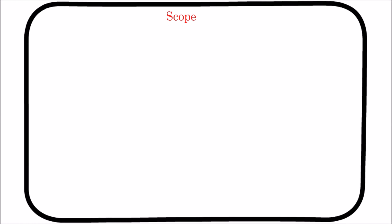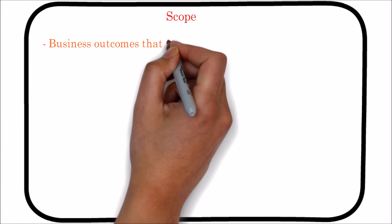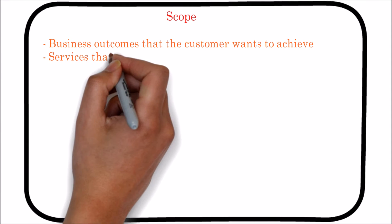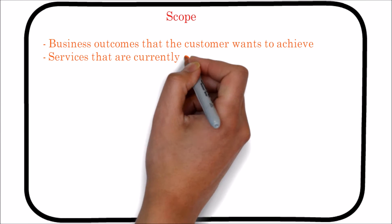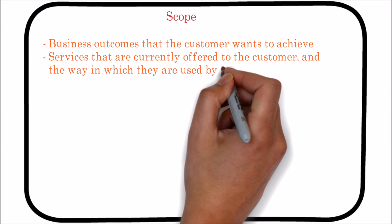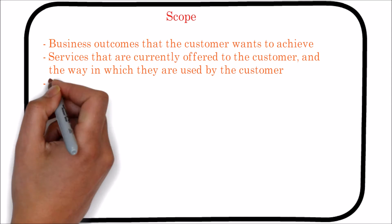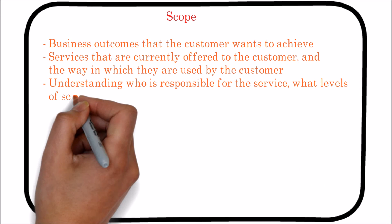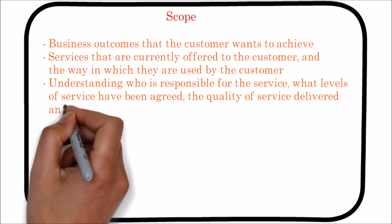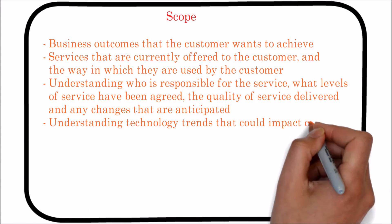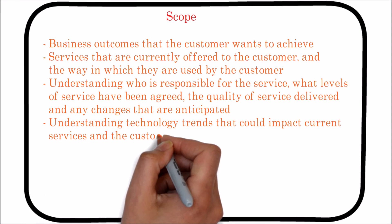The scope of the business relationship management process covers: business outcomes that the customer wants to achieve; services that are currently offered to the customer and the way in which they are used by the customer; understanding who is responsible for the service, what levels of service have been agreed, the quality of service delivered and any changes that are anticipated.